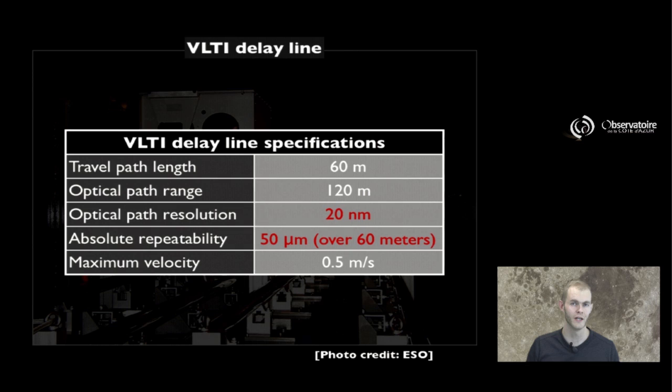And if you look at the specifications for these delay lines, you realize that it's pretty amazing technology there. For the VLTI example, the delay line specifications are a total travel path of about 60 meters for the trolley itself, which, if you account for the fact that the light goes back and forth, makes for an optical path range that goes from 0 to 120 meters tops.